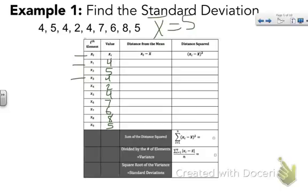4 minus 5 is negative 1. 5 minus 5 is 0. 4 minus 5 again is negative 1. 2 minus 5 is negative 3, negative 1. 7 minus 5 is 2, 1, 3, and 0. And again, to account for those negative numbers, I'm going to square all of those.